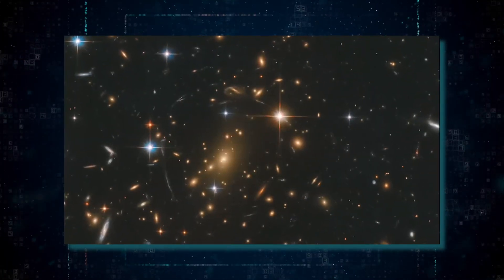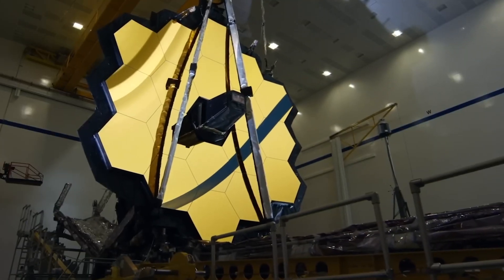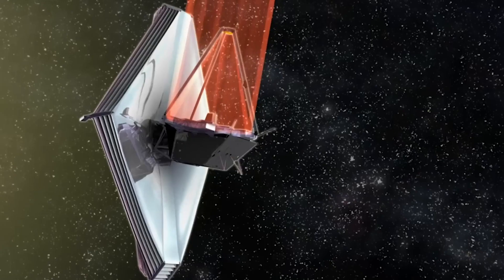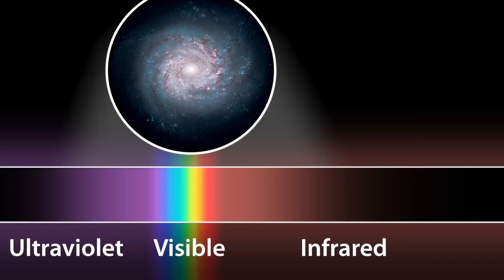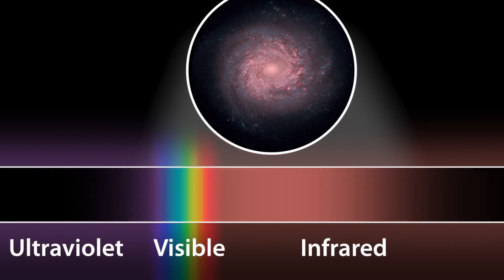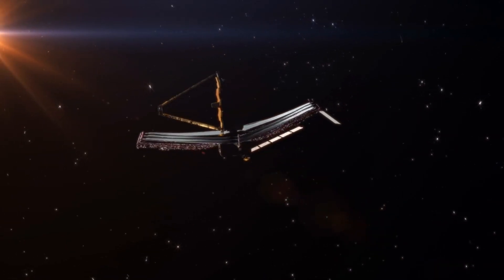But it's not just the mirror that makes the images from James Webb so incredible. It's also the type of light that it detects. The James Webb Space Telescope detects infrared light, which is a wavelength of light that we can't see, but the unique properties of infrared make it incredible for exploration.